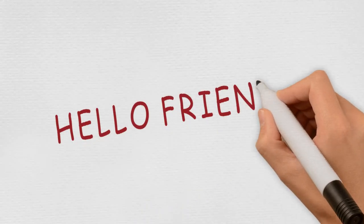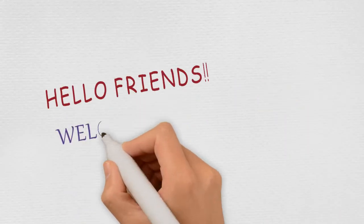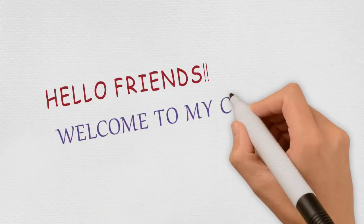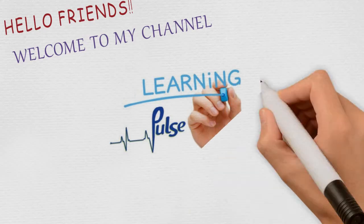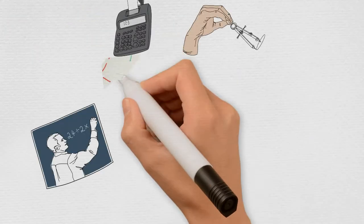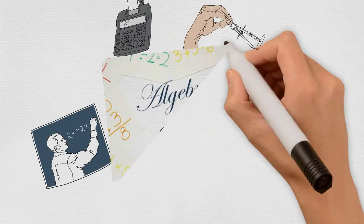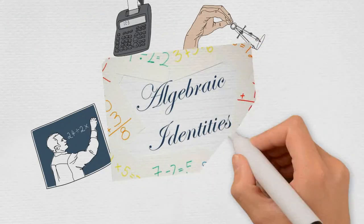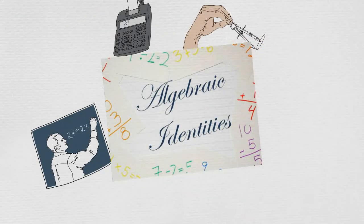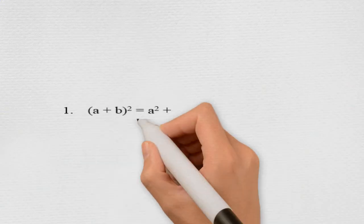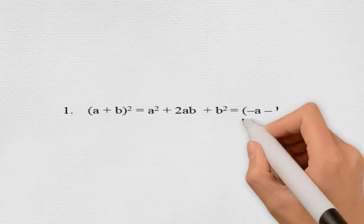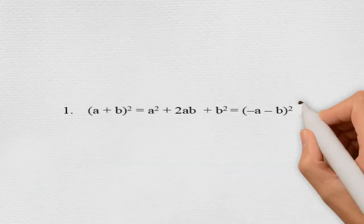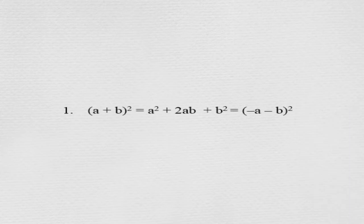Hello friends, welcome to my channel Learning Pulse. Today we are going to learn some algebraic identities. The first one is (a + b) whole square, which is equal to a square plus 2ab plus b square.